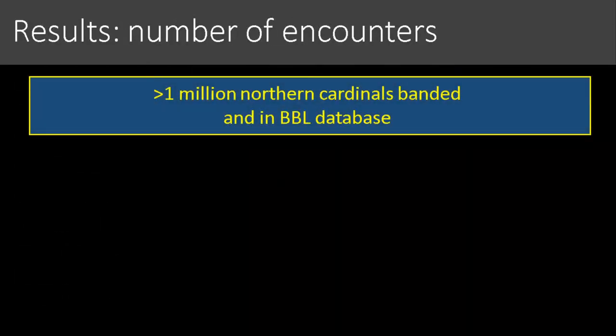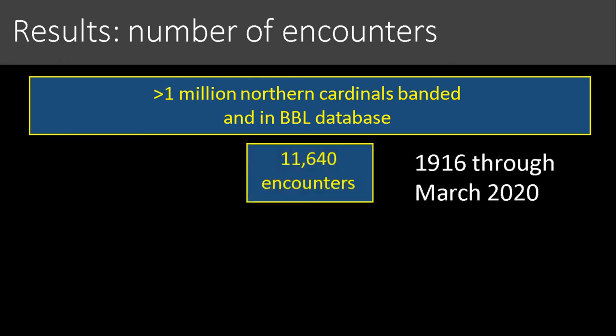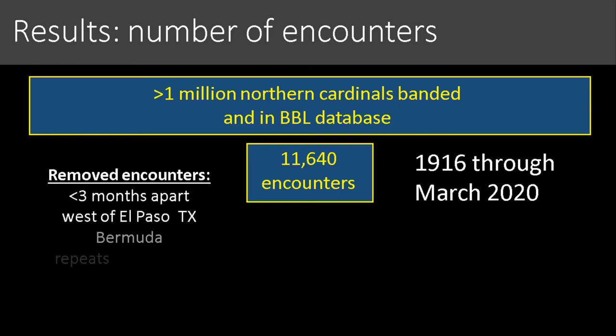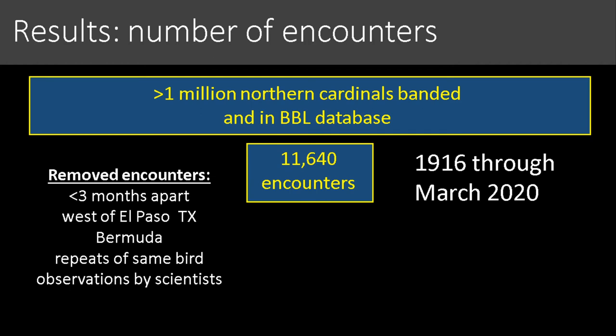Looking at the number of encounters: the Bird Banding Lab database has over a million northern cardinals banded, but very few encounters — remember, most banded birds are never seen again. There are over 11,000 encounters over approximately 100 years. But to deal with detection biases from scientists versus the public, I removed encounters that were less than three months apart — ensuring birds had time to actually engage in movement and cross into another season. I also removed birds on peripheral parts of their range and repeat observations of the same birds at new locations. After these removals, fewer than 3,000 encounters remained.